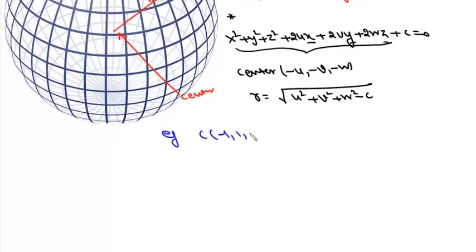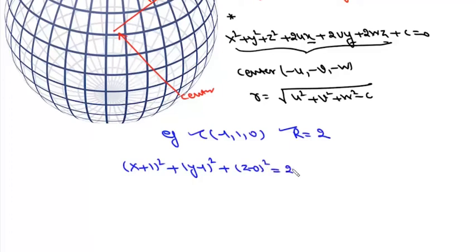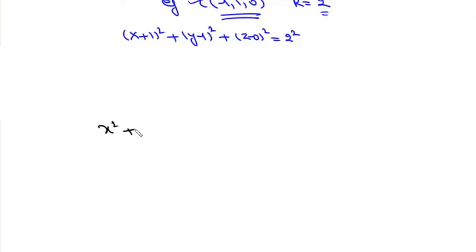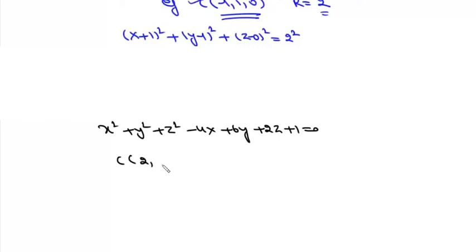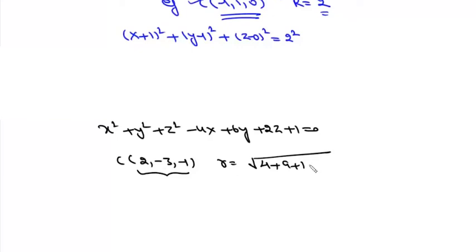For example, find the equation of a sphere whose center is at (−1, 1, 0) and whose radius is 2 units: (x+1)² + (y−1)² + z² = 4. If given x² + y² + z² − 4x + 6y + 2z + 1 = 0, the center is found as: coefficient of x is −4, divide by 2 gives −2, change sign gives 2; similarly y gives −3, z gives −1. So center is (2, −3, −1) and radius = √(4 + 9 + 1 − 1) = √13.